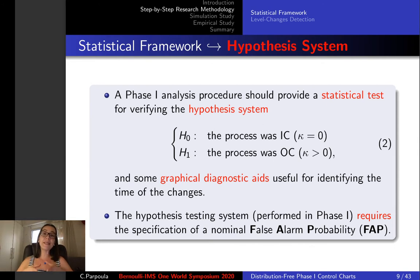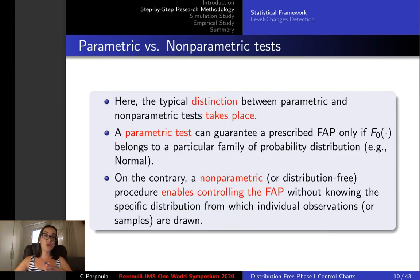Here the typical distinction between parametric and non-parametric tests takes place. Only a non-parametric procedure can enable the experimenter to control this false alarm probability without any knowledge about the specific distribution from which the individual observations are drawn.